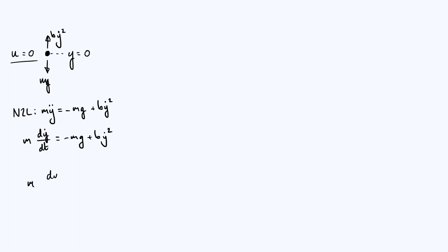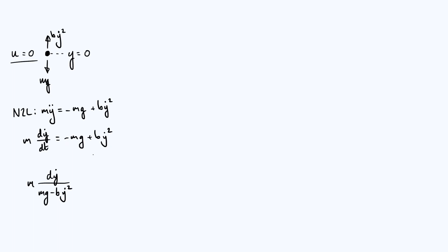We get m·dẏ over the denominator written as mg minus b·ẏ² — I chose to flip the signs in the denominator because it's going to make the integration easier, which leaves us with minus dt on the right-hand side. This is mostly the same as what we had last time, but this minus sign in the denominator is going to make a big difference to our solution.